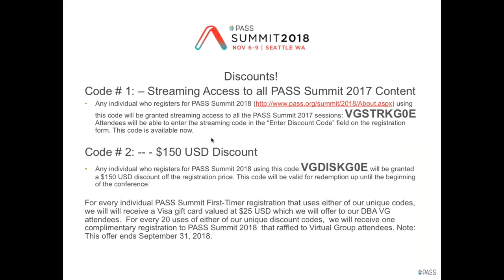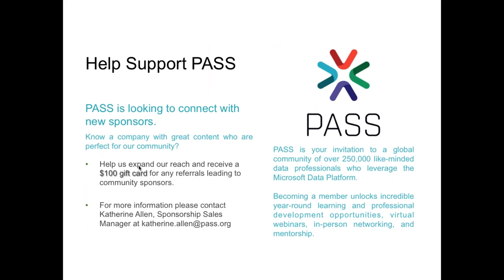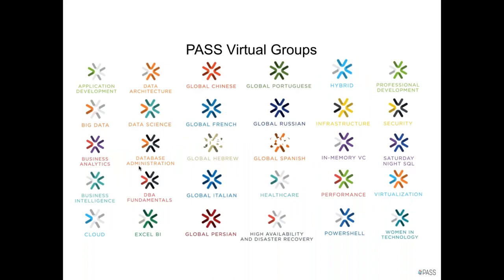We do have discounts for the PASS 2018 summit. You can use one discount code to get all of the 2017 summit streaming access — all the lectures from 2017 — or you could use the second code and get a $150 discount. PASS is also looking for new sponsors to connect with the virtual chapters and the PASS community. You can associate your PASS login with different chapter groups and receive emails about the meetings.